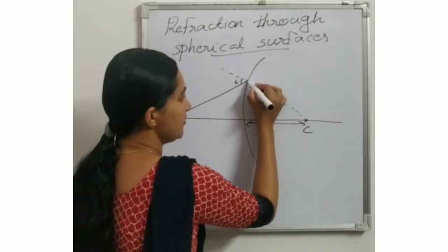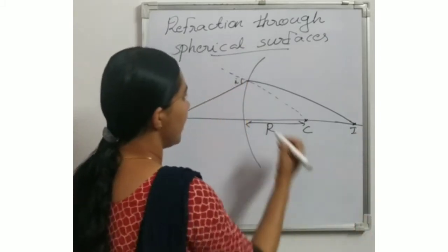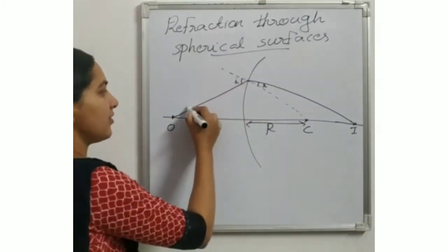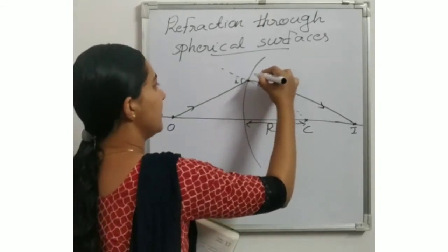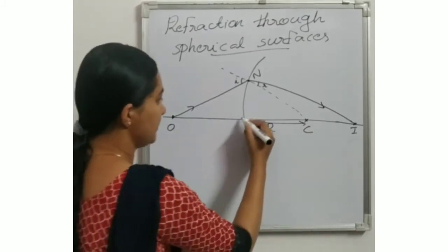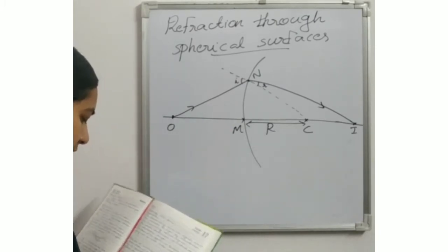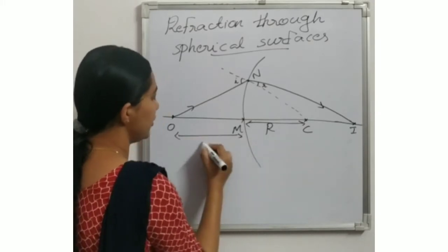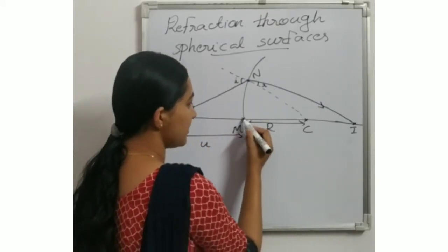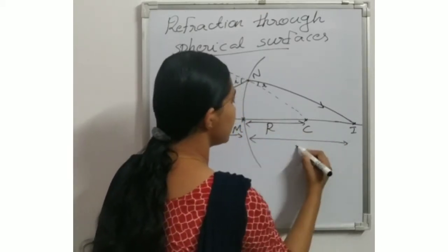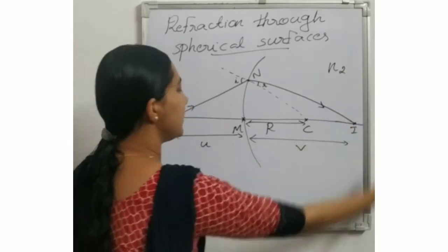Suppose the image is formed here. This will be the angle of refraction — the angle between the refracted ray and the normal, that is angle R. We can name the corresponding points: this as N, this as M. This will be the object distance U — the distance from the surface to the object. And the distance from this surface to the image will be V. So we have object distance and image distance. Suppose the refractive index of the first medium is N1 and the refractive index of the second medium is N2.